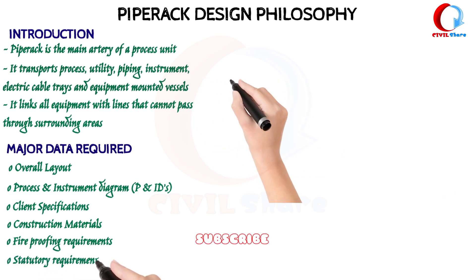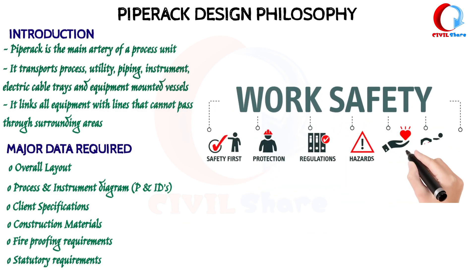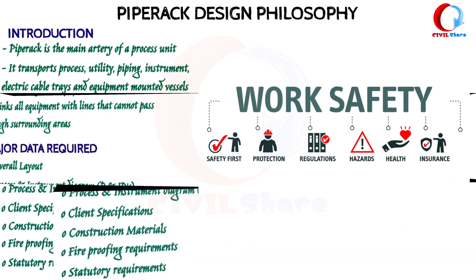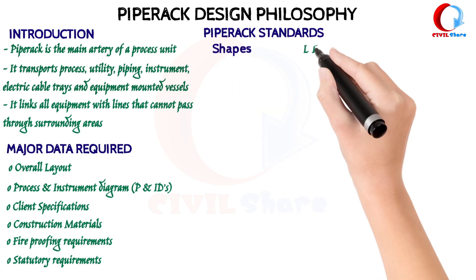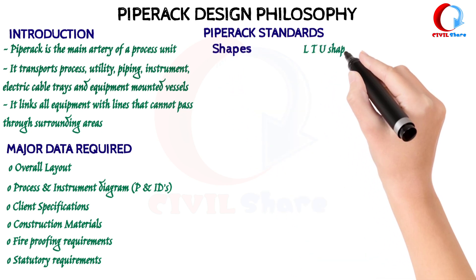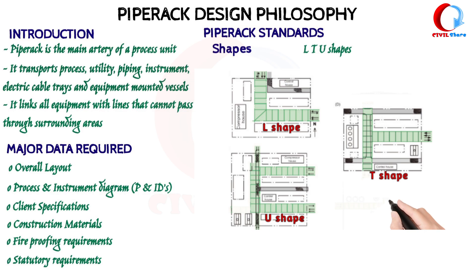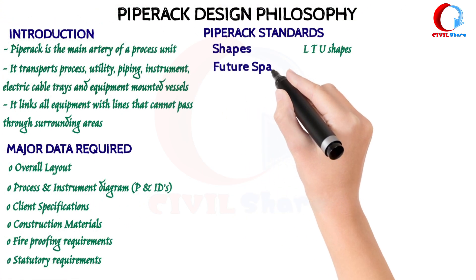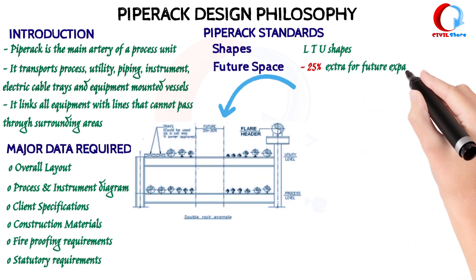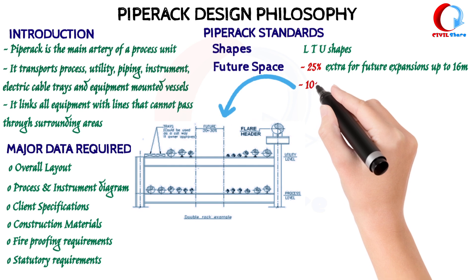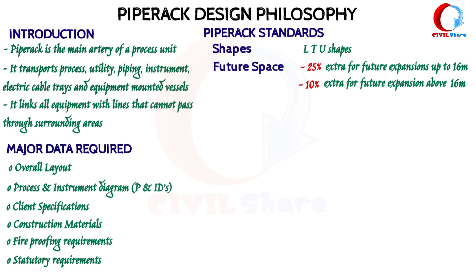Statutory Requirements: Pipe Rack construction should ensure fall hazard risks and worker safety, in compliance with OSHA and CSA guidelines. Pipe Rack Shapes: L, T, and U shapes. Future Space: 25% extra space is reserved for future expansions up to 16m, and 10% extra for future expansion above 16m.